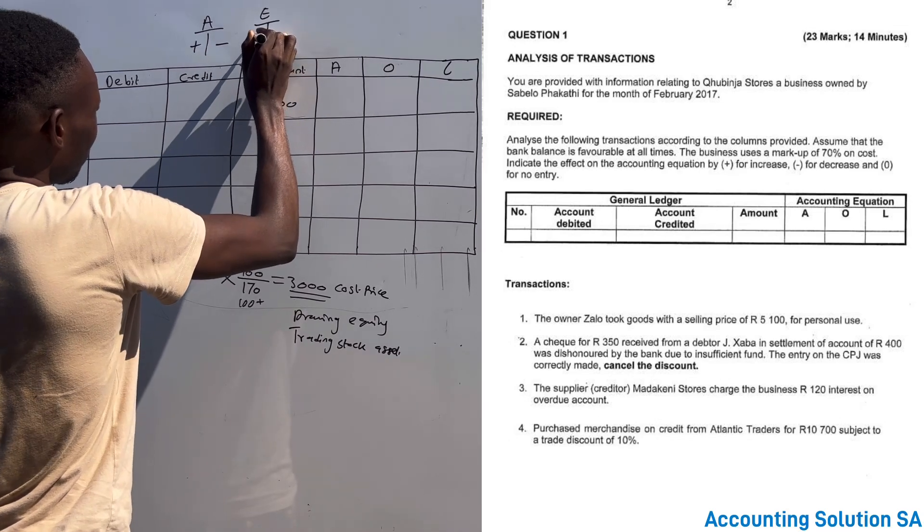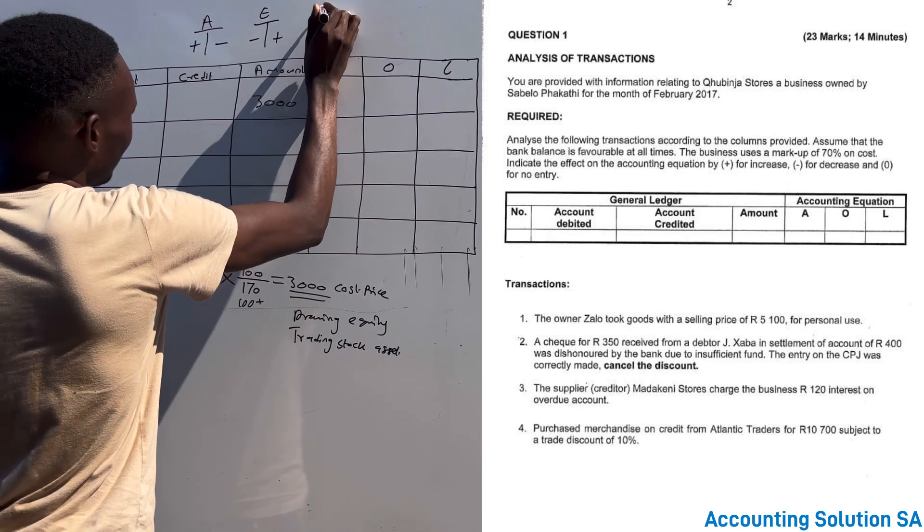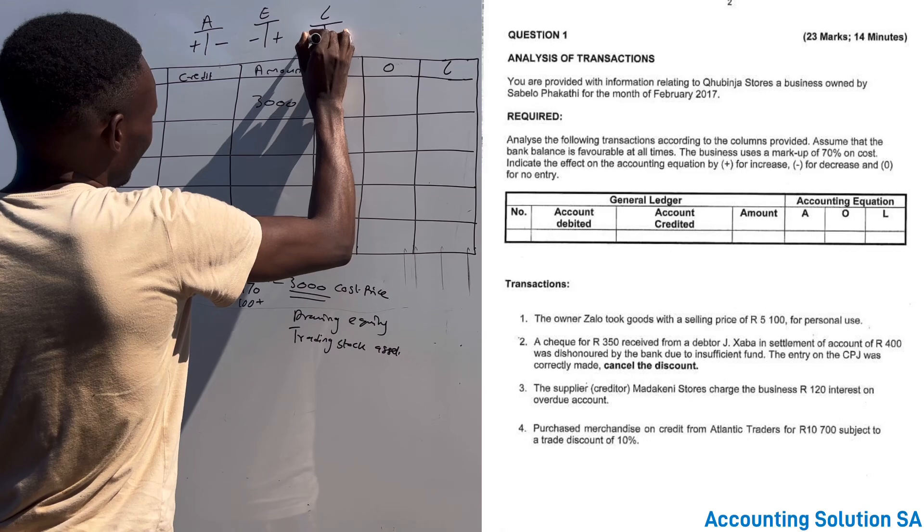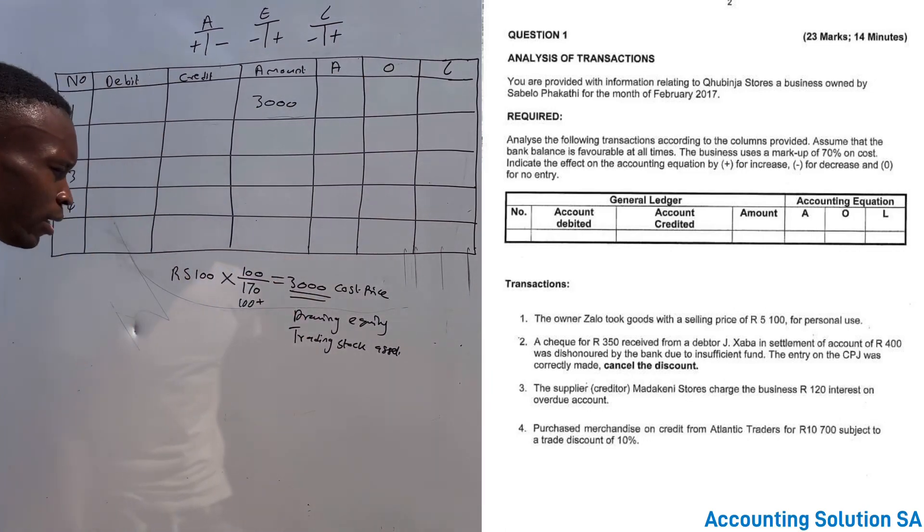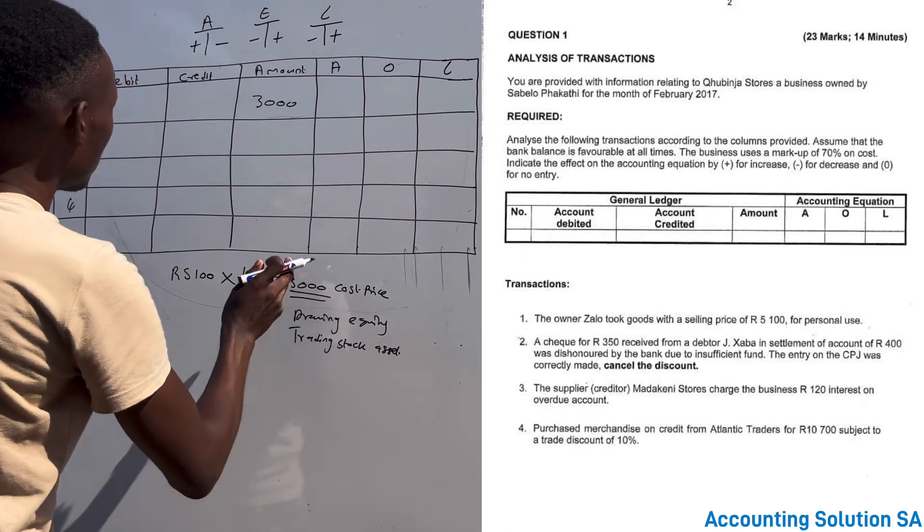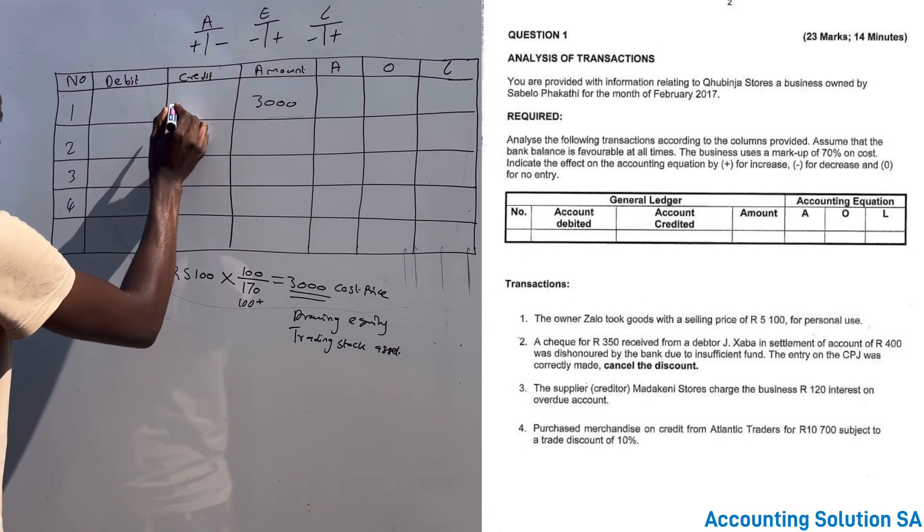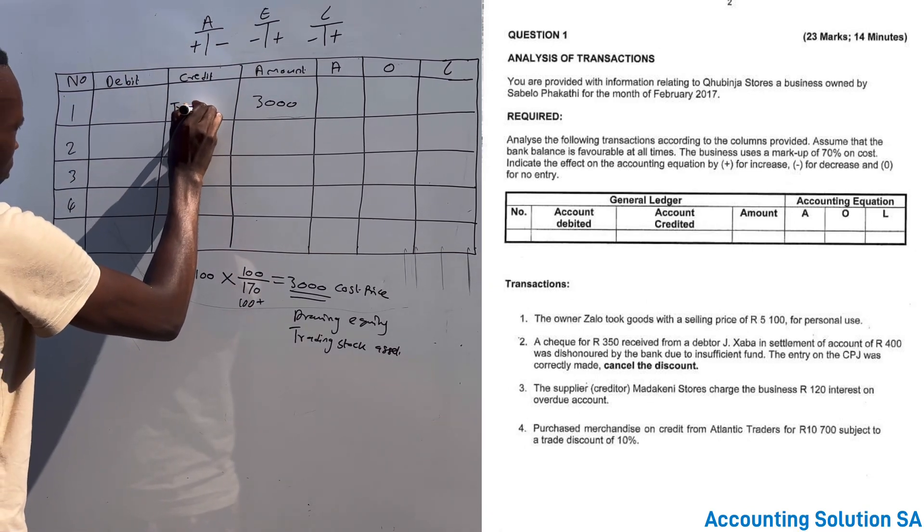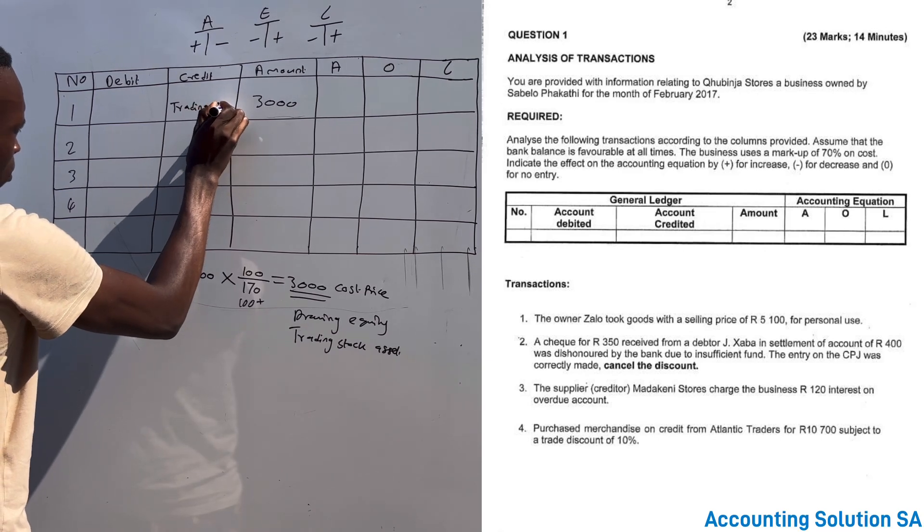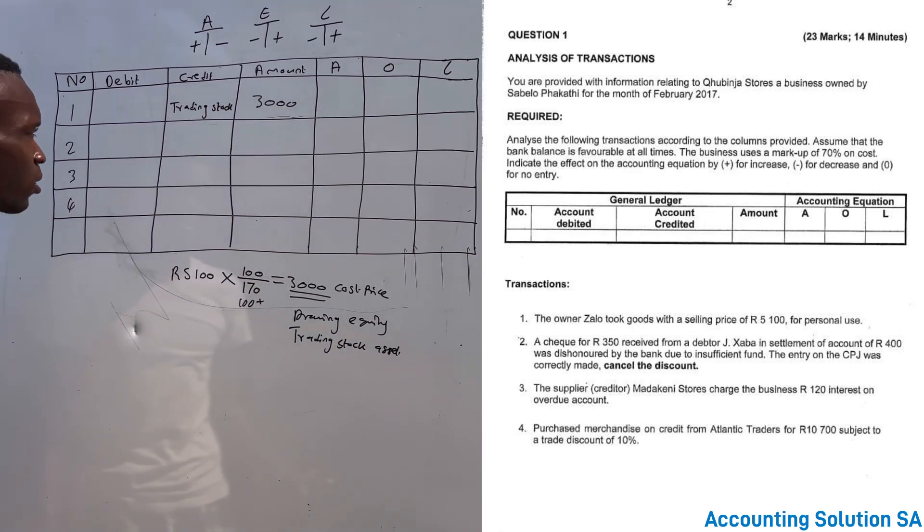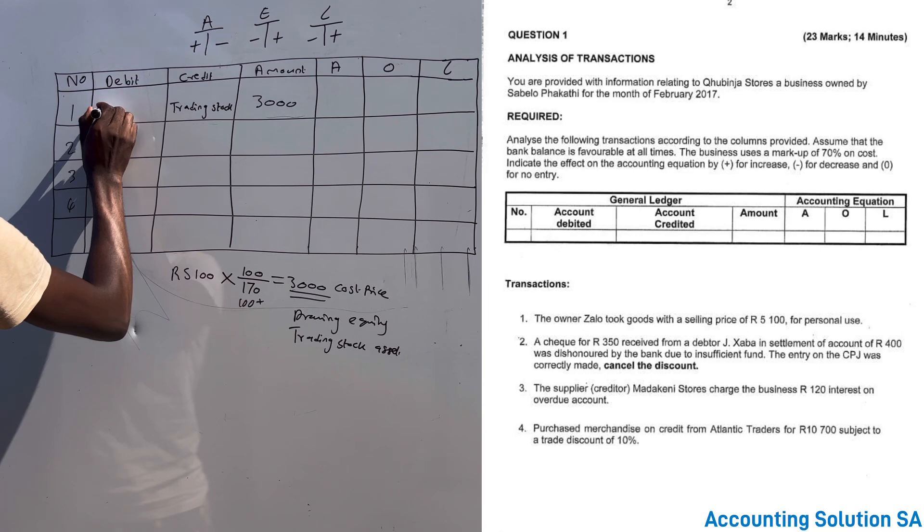In other words, our trading stock we're going to credit it because the owner took it and it's minus. It's trading stock. Which means that drawings obviously we're going to debit.